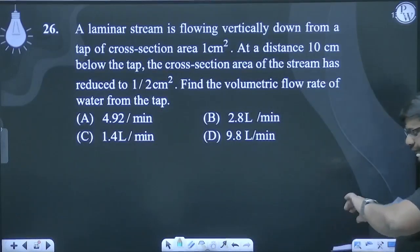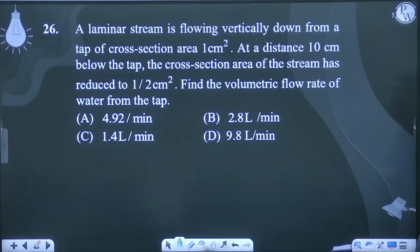A laminar stream is flowing vertically down from a tap of cross-section area 1 cm². At a distance 10 cm below the tap, cross-section area of stream has reduced to half. Find the volumetric flow rate of the water from the tap.